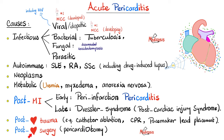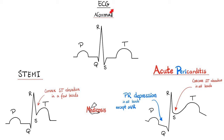CPR can lead to inflammation of the pericardium — of course, it is traumatic and can break ribs. Pacemaker lead placement can also injure the pericardium. Post-cardiac surgery — such as a pericardiotomy, which means making an incision in the pericardium — can also cause injury.